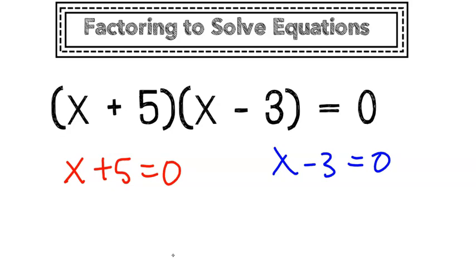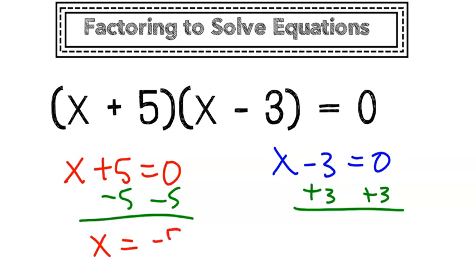We call this the splits where we take our original 1 equation and turn it into 2. Using our inverse operations, we can find our potential 2 solutions. x is either equal to negative 5 or x is equal to positive 3.